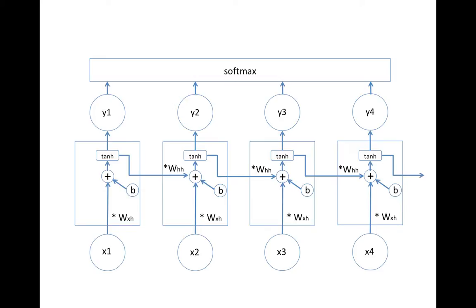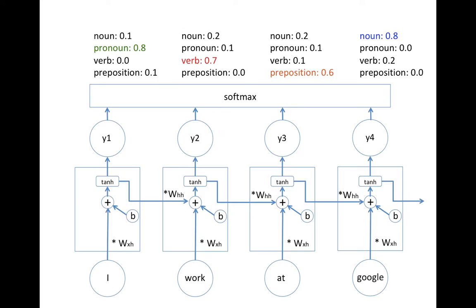Now, let's see how we can infer POS tagging using this architecture. What we need is a softmax layer to get the probability for the output values. If we have a set of possible POS tags, the softmax can give us each output's probabilities, just like this. You can see the difference when the input sequence is different.